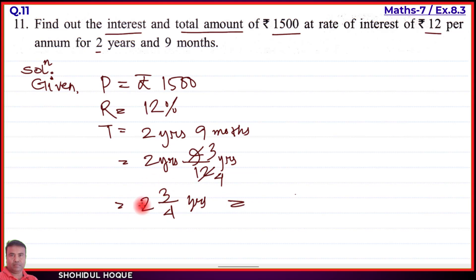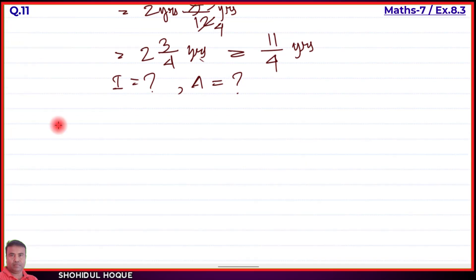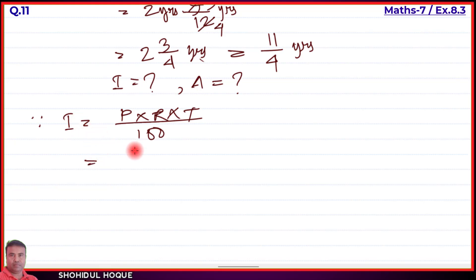Converting 2 years and 9 months to an improper fraction: T = (8 + 3)/4 = 11/4 years. Now applying the simple interest formula: I = (P × R × T) / 100.